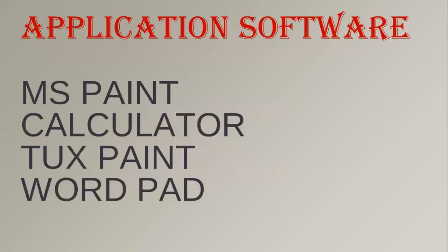The next type is application software — software that is in the computer but without which the computer can still run. It's like an AC or music system in a car; without them the car still works perfectly. These software are used for specific purposes only. Examples are MS Paint for drawing, Calculator for calculation, Tux Paint for drawing, and WordPad for typing.